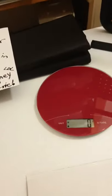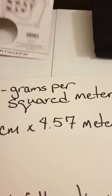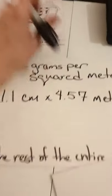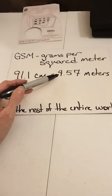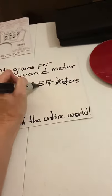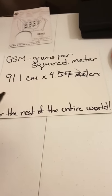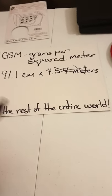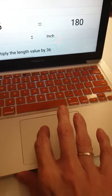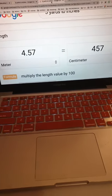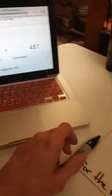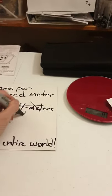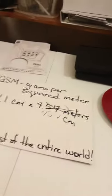Now what about the other measurements listed in parentheses on the package? We can figure that out pretty easily. It says 91.1 centimeters by 457 meters. Again, you cannot compare centimeters to meters directly — you've got to convert to the same unit. If you're not sure, turn to a calculator and ask it to convert that for you. So 457 meters is going to become 457 centimeters — wait, we need to convert properly using the calculator.